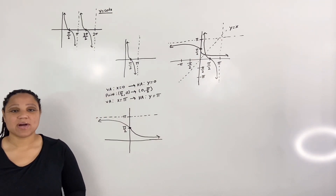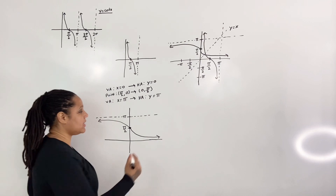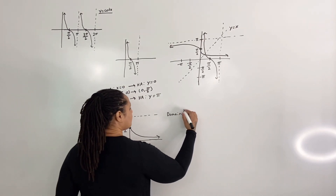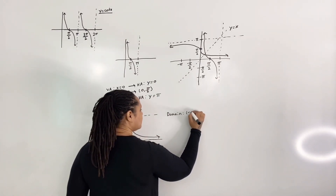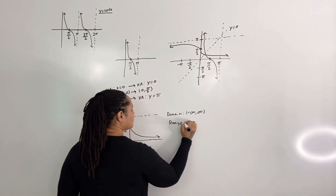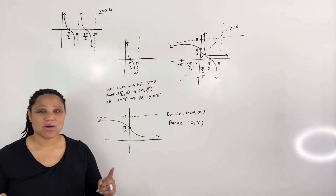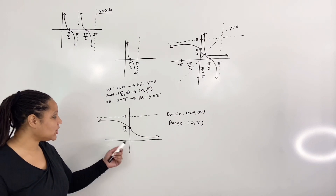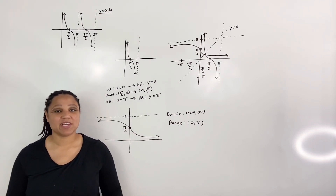Now, it is easy for us to identify the domain and range of inverse cotangent. The domain is from negative infinity to positive infinity, and the range is from 0 to pi. Note that we have parentheses, which means we're not actually including 0 or pi, but we can have values that come very close to them.